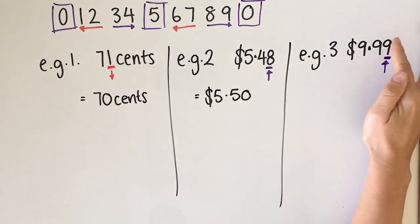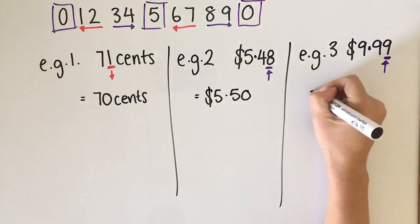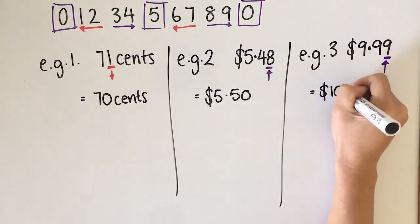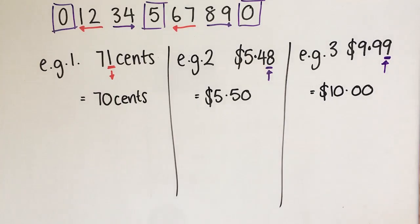Now if I change 99 up, the next cent up from this is going to be ten dollars. So our answer would be ten dollars.